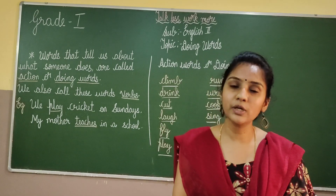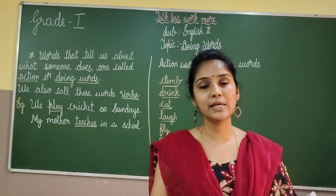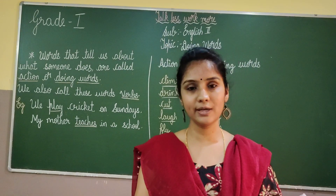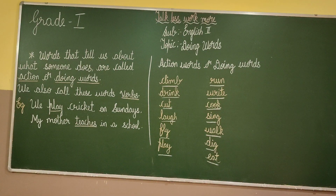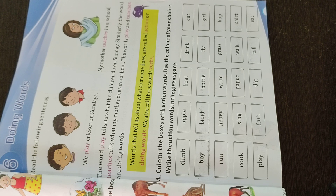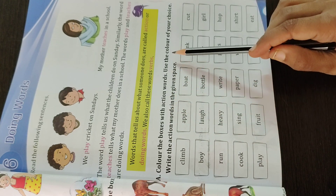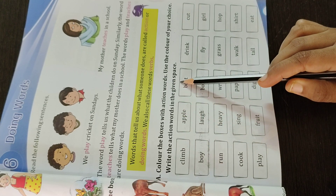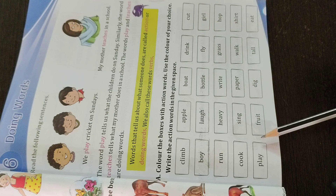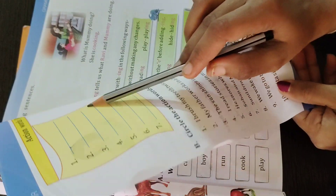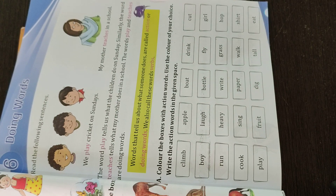We shall learn more about doing words by doing the textbook exercise. I want you all to be ready with your pencil and color salts. You can take any one color. Exercise A: Color the boxes with action words using the color of your choice, then write the action words in the given space. First we will start coloring the action words.